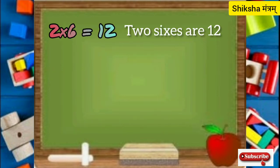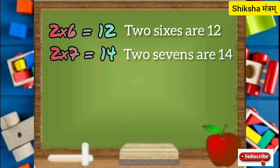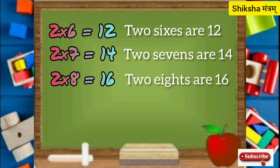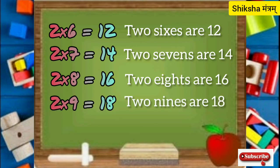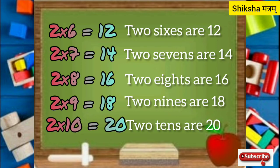2 6s are 12, 2 7s are 14, 2 8s are 16, 2 9s are 18, 2 10s are 20.